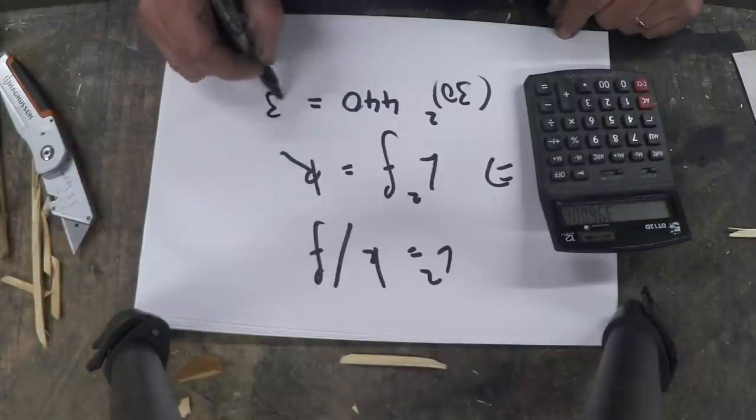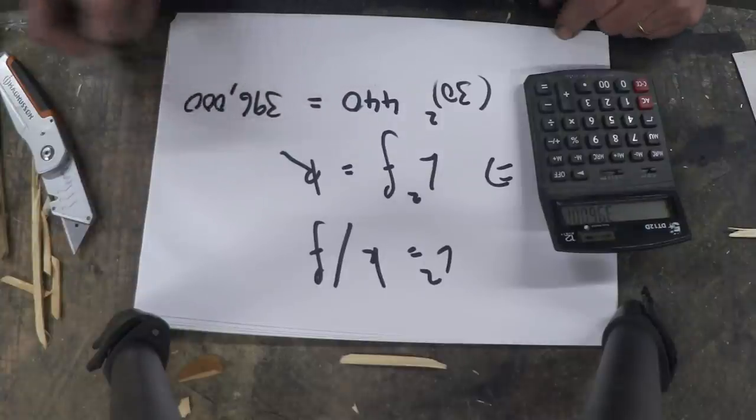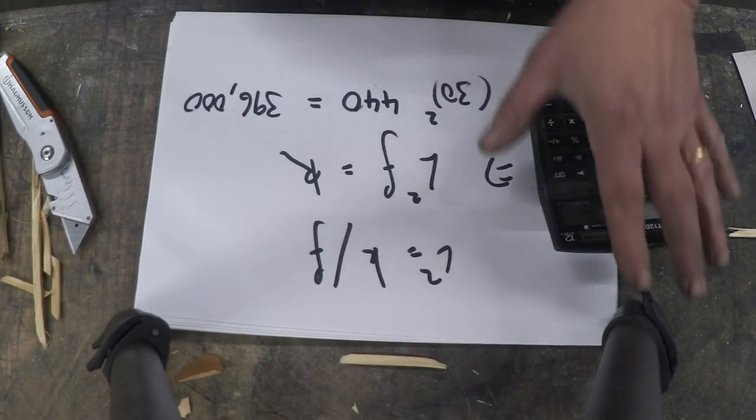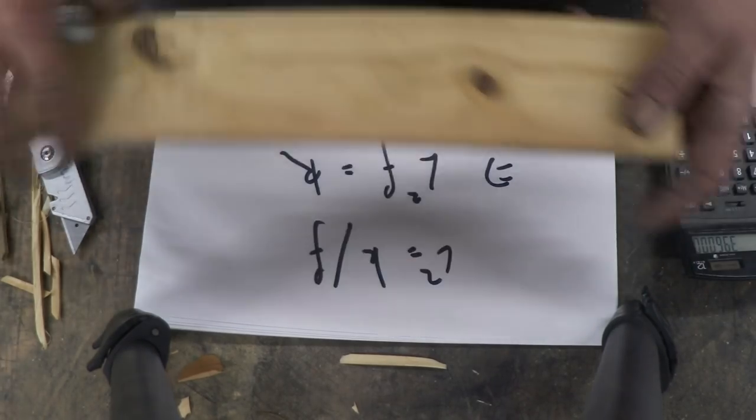Which is 396,000. It doesn't really matter. That's the value of k for all of these.